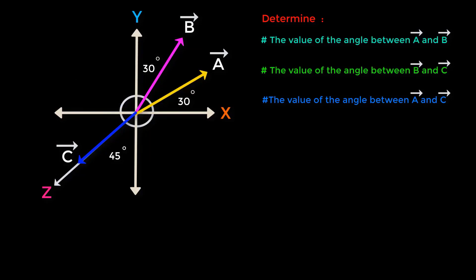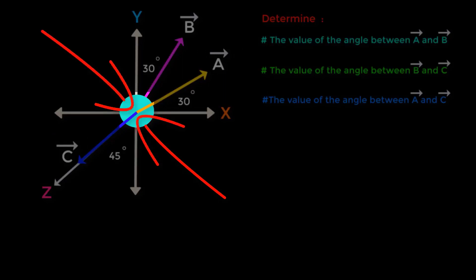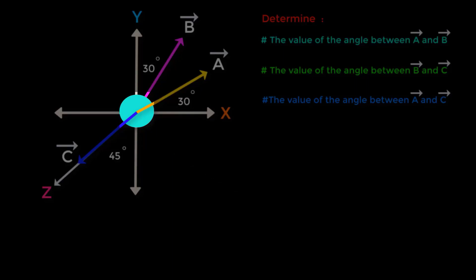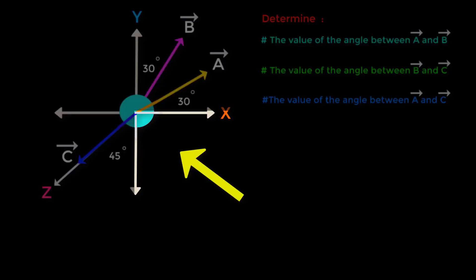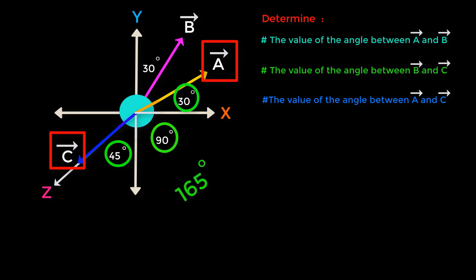Now we will find the angle between vector A and vector C. There are also two angles here. The angle greater than 180 degrees cannot be the angle between them, so this smaller angle will be the angle between these two vectors. This is a 90-degree angle, so the value of the angle between vector A and vector C is 45 degrees plus 90 degrees plus 30 degrees, which equals 165 degrees.